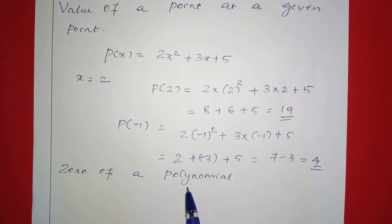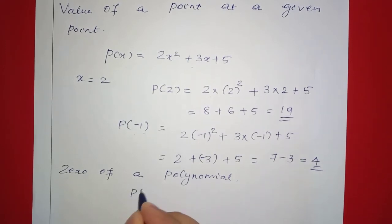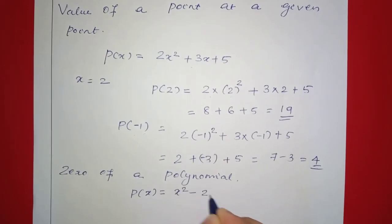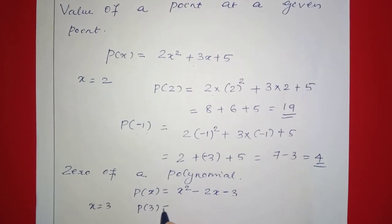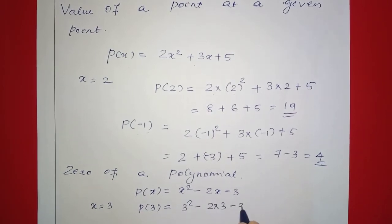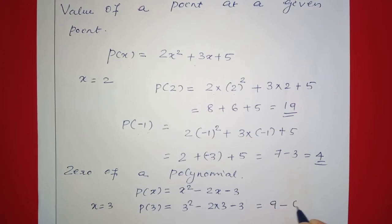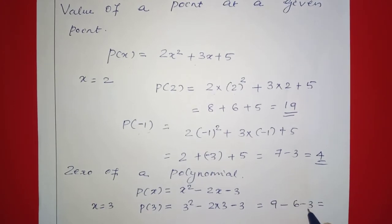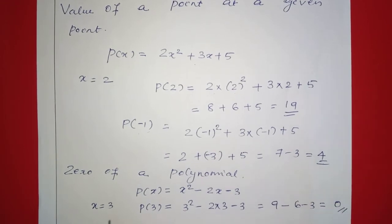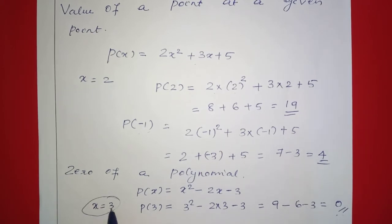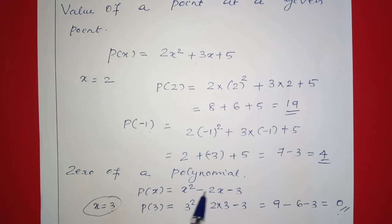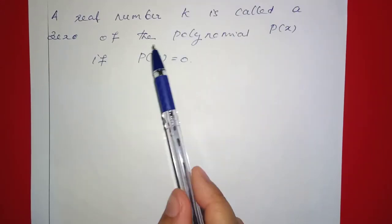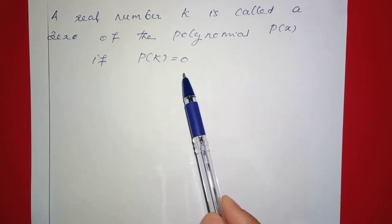Next: zero of a polynomial. Consider p of x equal to x squared minus 2x minus 3. At x equal to 3, p of 3 equals 3 squared minus 2 into 3 minus 3, which is 9 minus 6 minus 3, equal to 0. So x equal to 3 makes p of x equal to 0. The real number k is called a zero of the polynomial p of x if p of k is equal to 0.